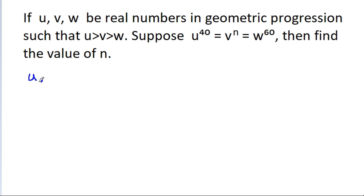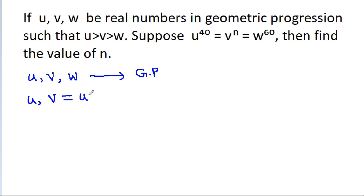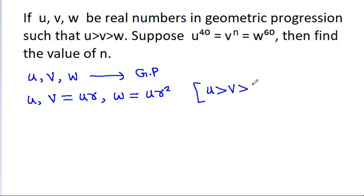So u, v, and w are in GP. That means v = u·r and w = u·r². Since u > v > w, r cannot be greater than 1, so r will be between 0 and 1.